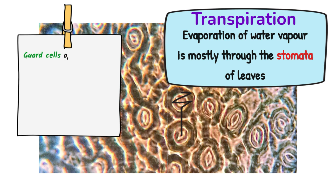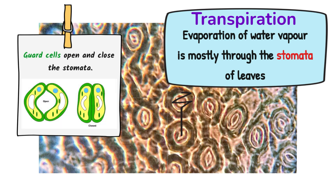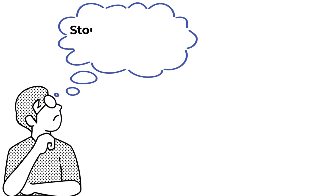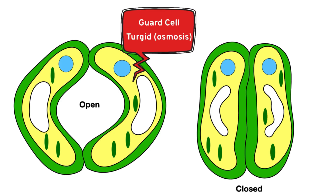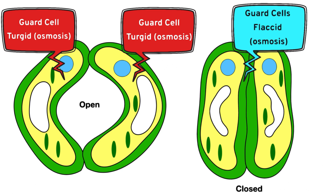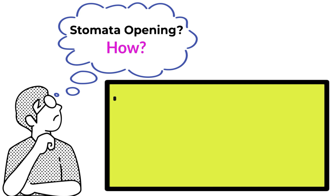Stomata are literally tiny holes on the leaves, and the opening and closing of the stomata is controlled by particular cells known as guard cells. Osmosis is the key to understanding how the guard cells open and close the stomata. When the stomata are open, the guard cells are turgid and buckle outwards. When they lose water by osmosis they become flaccid and this closes the stomata. So osmosis is the process by which they become turgid or flaccid — but what drives the osmosis?